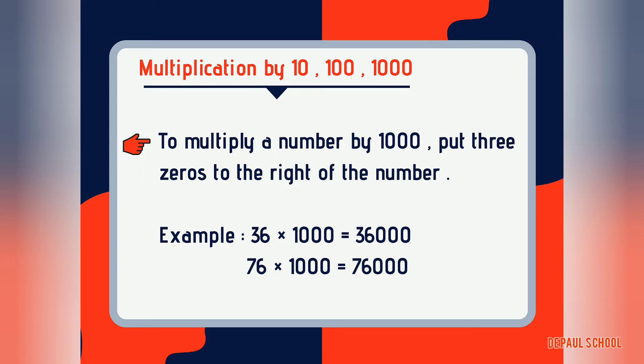To multiply a number by 1000, we add three zeros to the right of the number. For example, 36 multiplied by 1000 gives 36,000, and 76 multiplied by 1000 gives 76,000. This is how we do multiplication when multiplying numbers by 10, 100, and 1000.